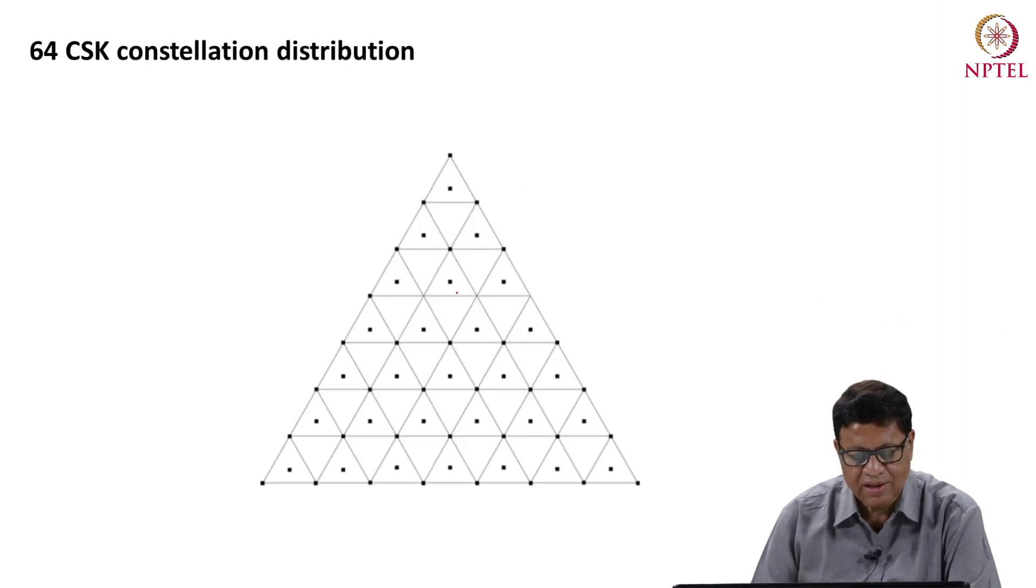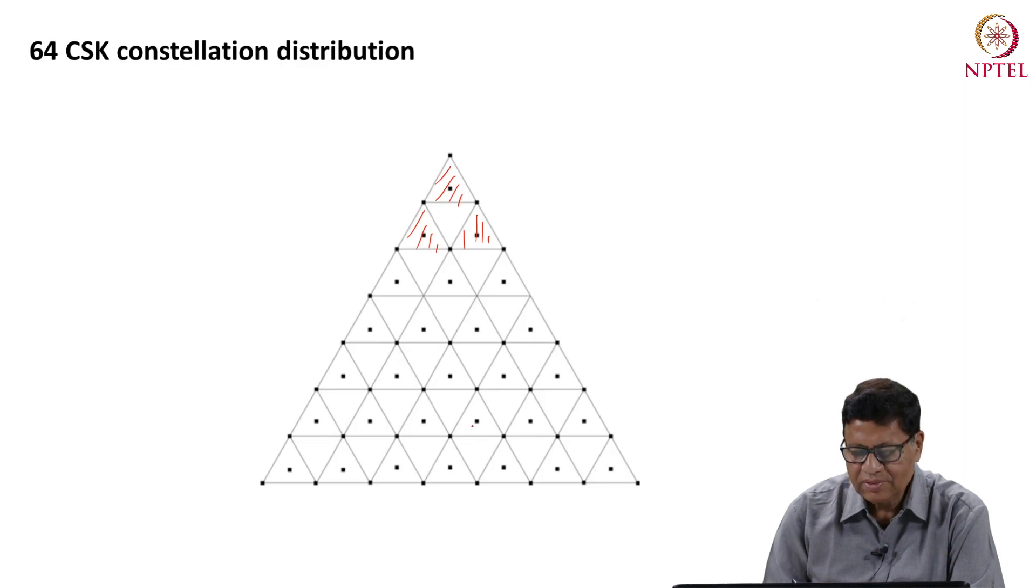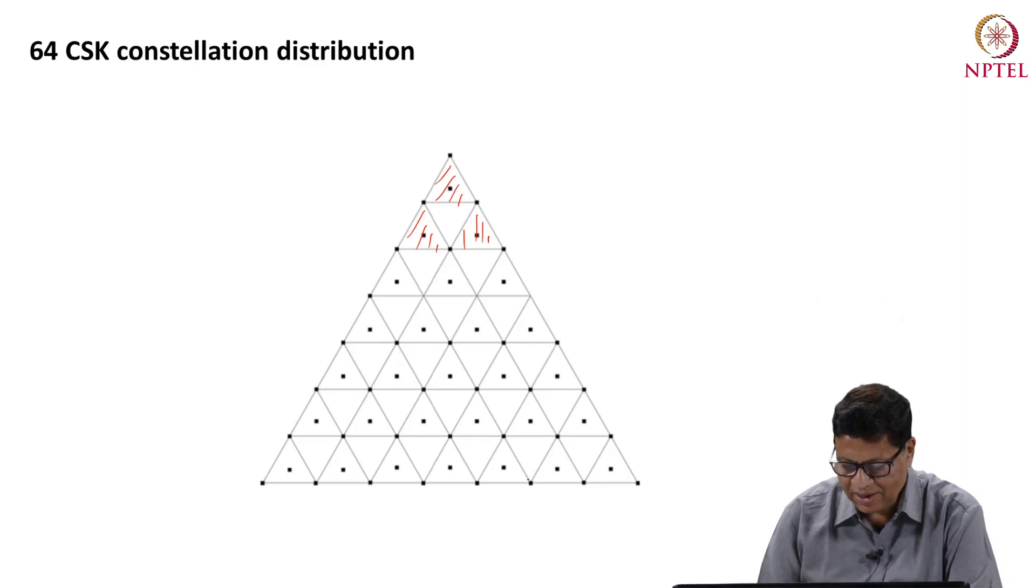This is for a 16 over CSK constellation points. Basically if you see the constellation diagram and the decision region is same for all the points. So you calculate for any one point and then one can find out the constellation point and the total probability or symbol error rate for a 64 CSK constellation distribution.